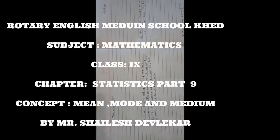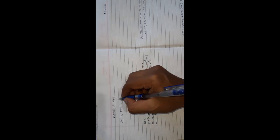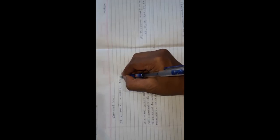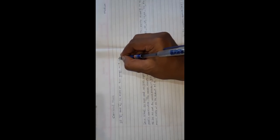Hello everybody, today we are going to see our next topic that is combined mean. So what is meant by combined mean? If x̄₁ and x̄₂ are the means of two groups with sizes n1 and n2 respectively, then x̄ is the combined mean of the two groups.